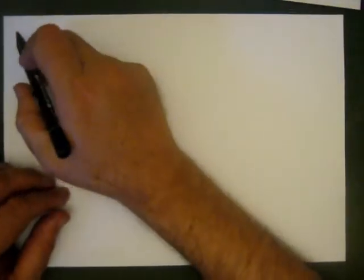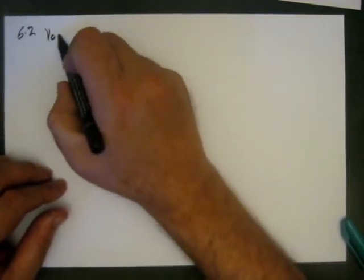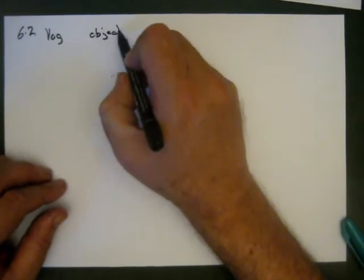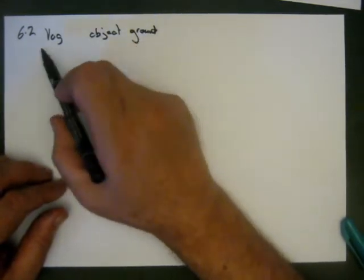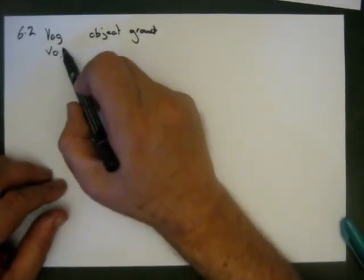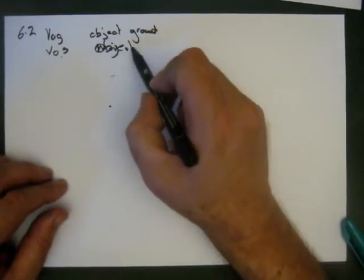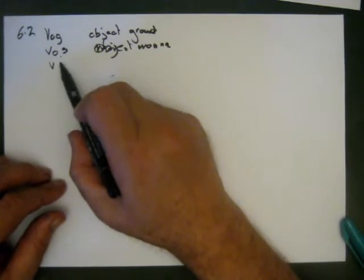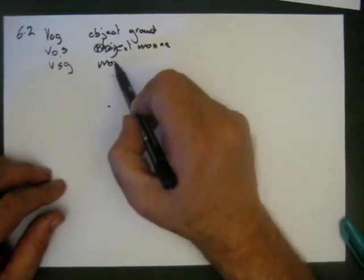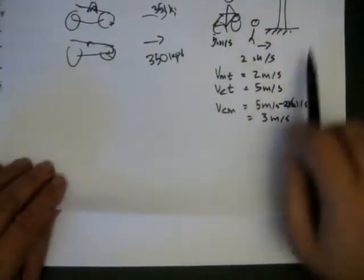Let's set this up formally — this is section 6.2. We define: v_og as the velocity of the object relative to the ground, v_os as the velocity of the object relative to the moving system, and v_sg as the velocity of the moving system relative to the ground. It's a more formal way of expressing what we were already saying.